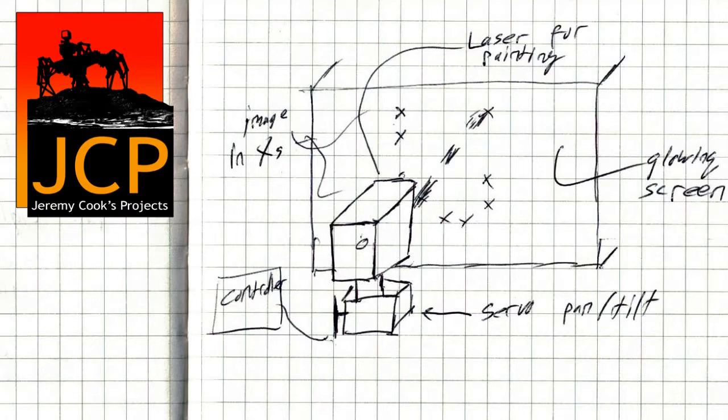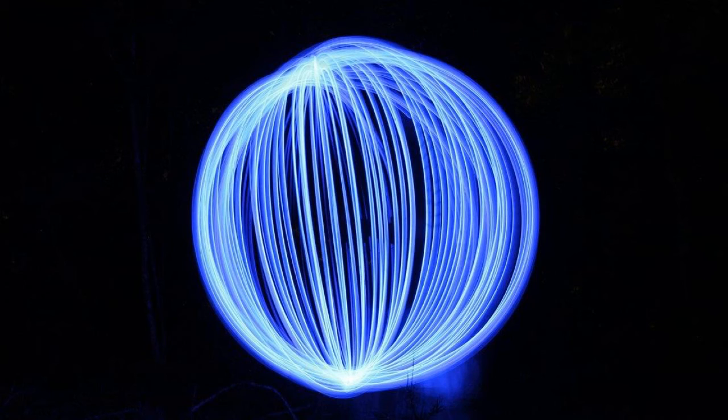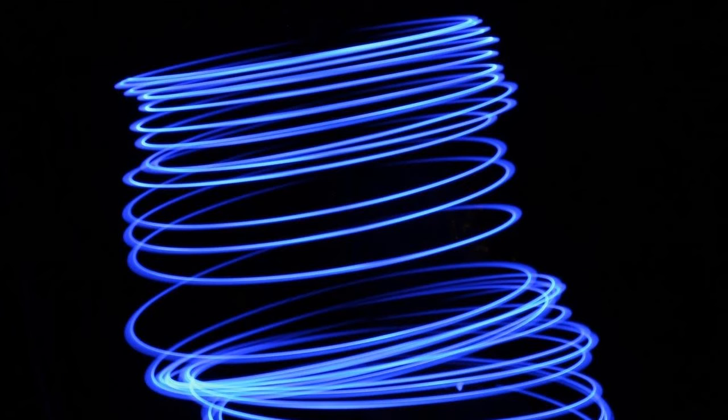To begin with, I did things manually. This meant either moving the camera around while pointing at a light source or moving the light source around with the camera stationary. For example, a sphere or vortex can be created by swinging the light around while the camera records all the light going into it.